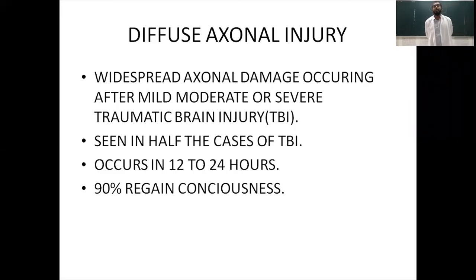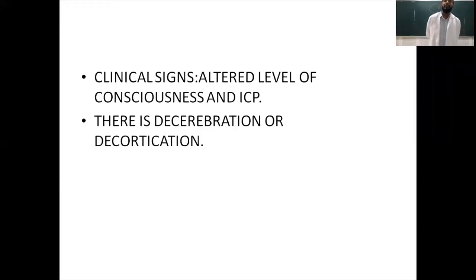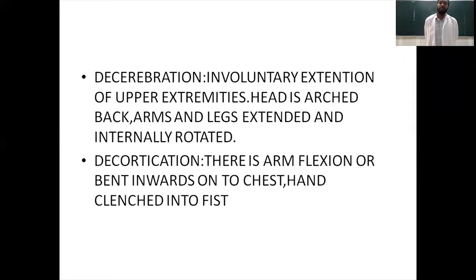Diffuse axonal injury is the widespread axonal damage occurring after mild, moderate, or severe traumatic brain injury. It is seen in half the cases of traumatic brain injury, occurs 12 to 24 hours after injury, and there is 90% regainment of consciousness. Clinical signs include altered level of consciousness, altered ICP, decerebration, and decortication. Decerebration is involuntary extension of the upper extremities, arching back of the head, with arms and legs extended and internally rotated. Decortication is flexion of the upper limbs bent inwards onto the chest with the hand clenched into a fist.